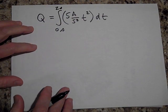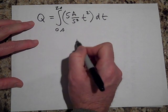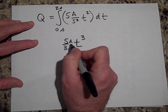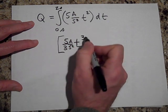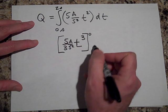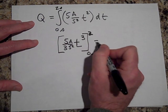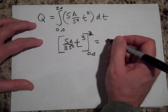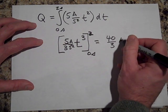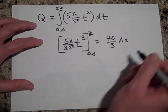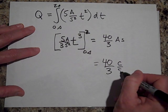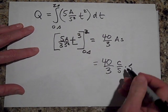We said that I equals dq/dt and now we're taking the integral. The integral is going to be t cubed, and then 5/3 amps per second squared, going from zero to two seconds. When you put in zero you get nothing, but when you put in two you get 8 times 4/5, which is 40/3. So we get 40/3 amp-seconds, which is 40/3 coulombs.